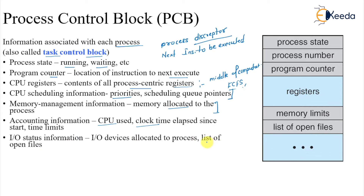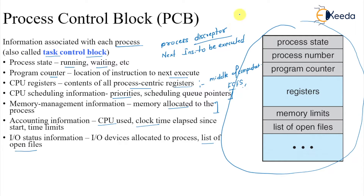I/O information includes I/O devices allocated to the process and the list of open files. All of this comprises the PCB for a single process. The operating system maintains as many PCBs as there are processes, so it stores a very large amount of data in this data structure for each process.